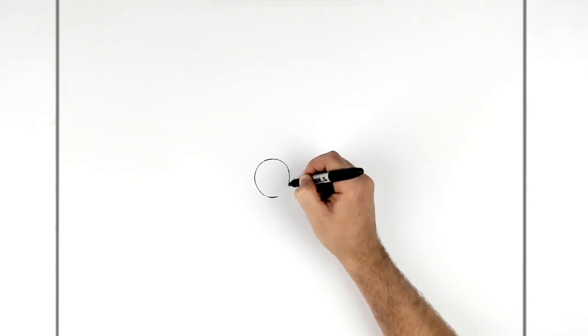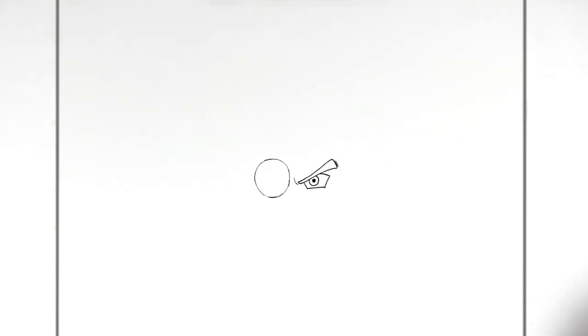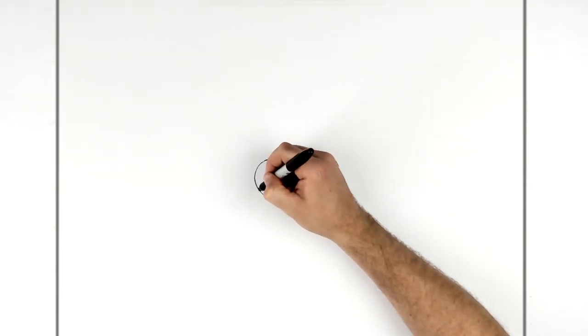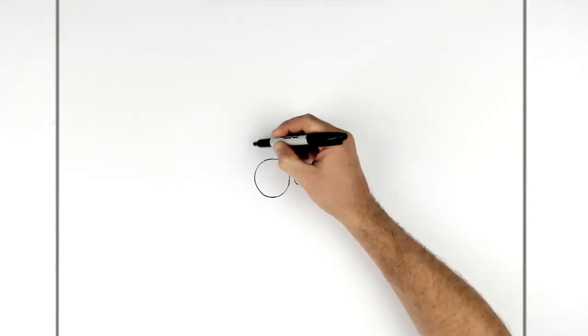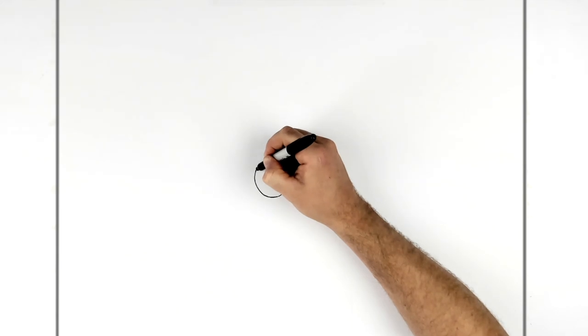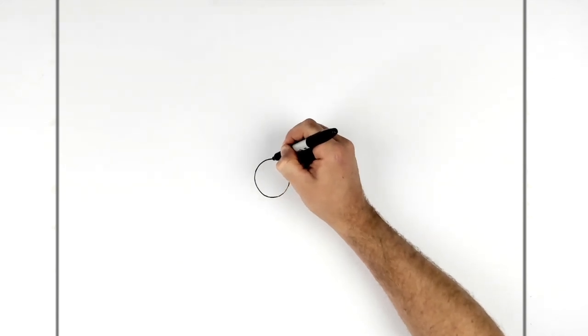And it doesn't have to be perfect, but if you want it perfect use a compass or a stencil. Something like that. Now just try and clean this up a little bit. That's roughly the size we're dealing with.